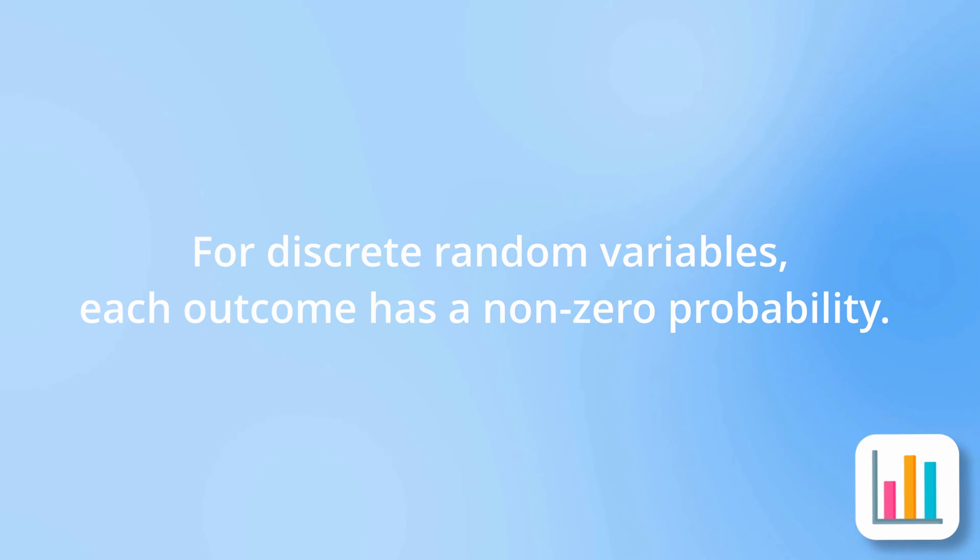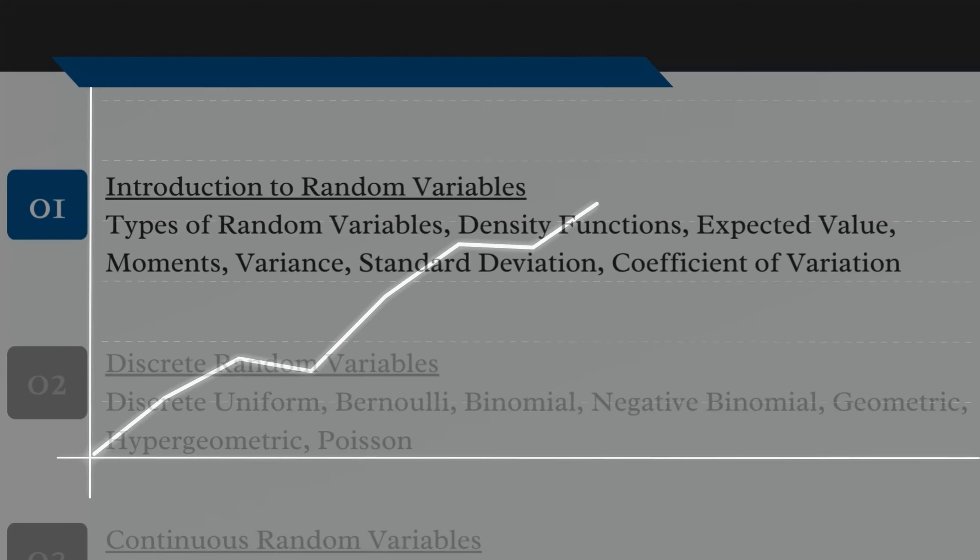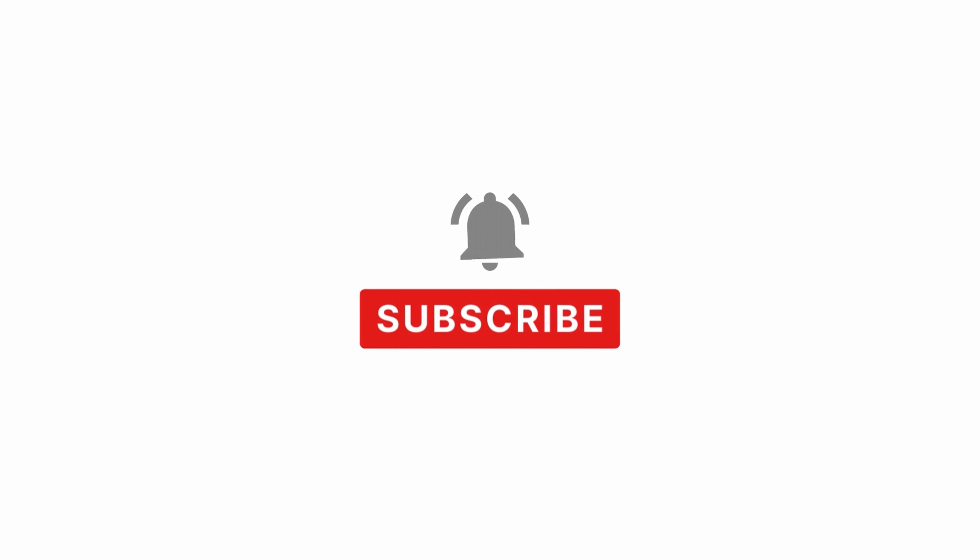With discrete random variables, each outcome has a non-zero probability. The set of all values with non-zero probability is known as the support of the random variable. Continuous random variables work a little bit differently, but we'll talk about that later in the series. So if you don't want to miss out, be sure to subscribe and stay tuned for details.